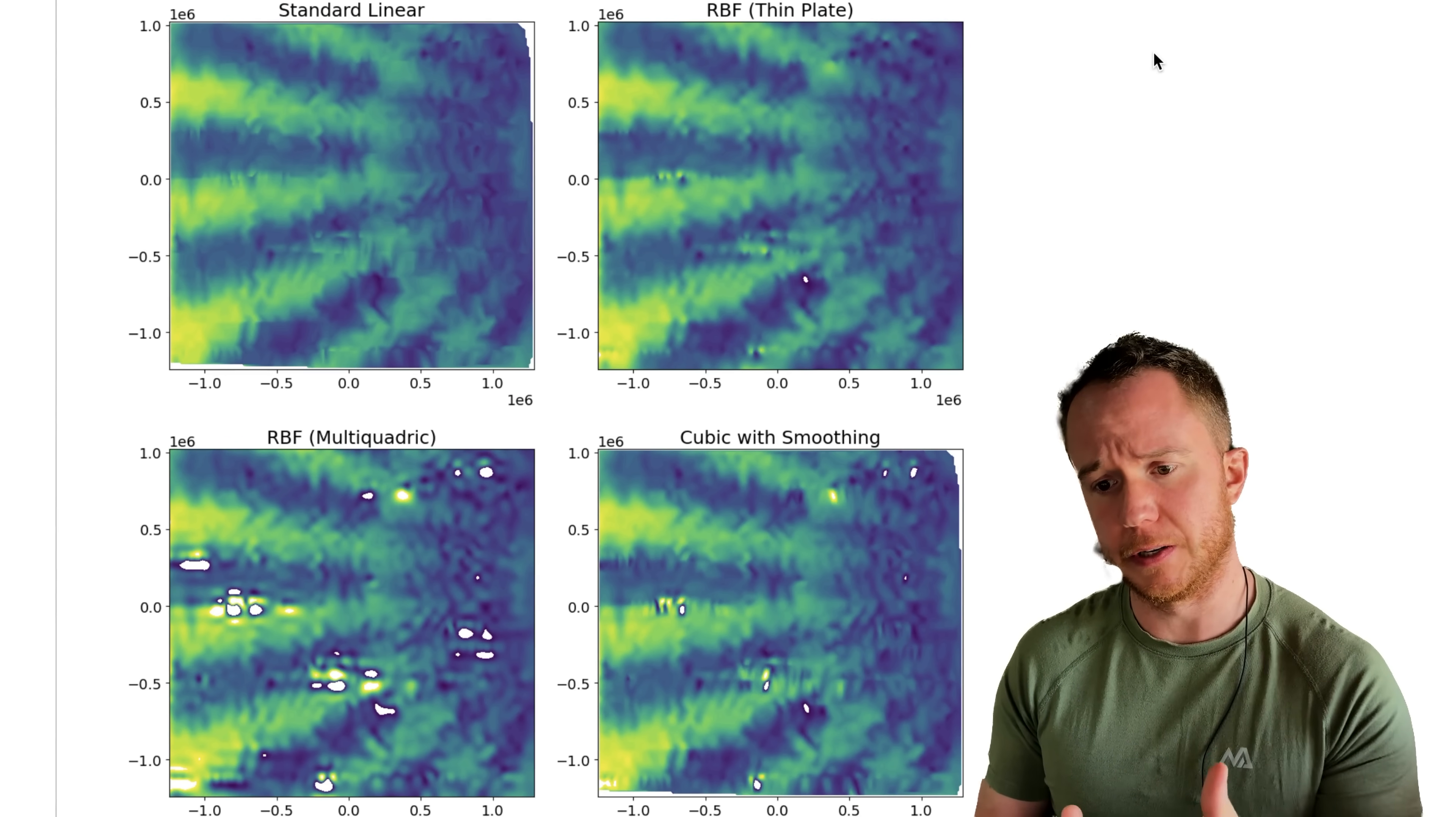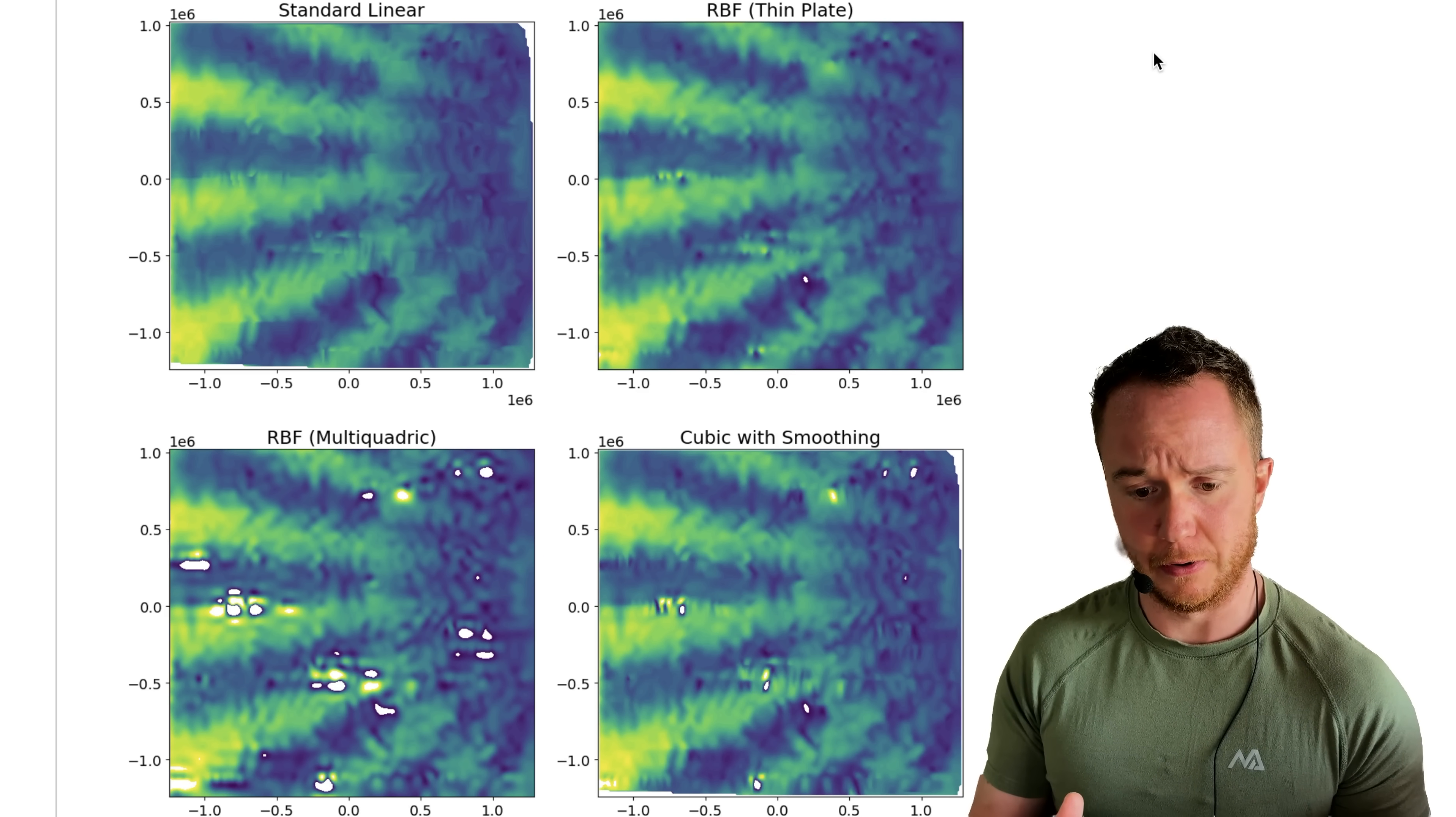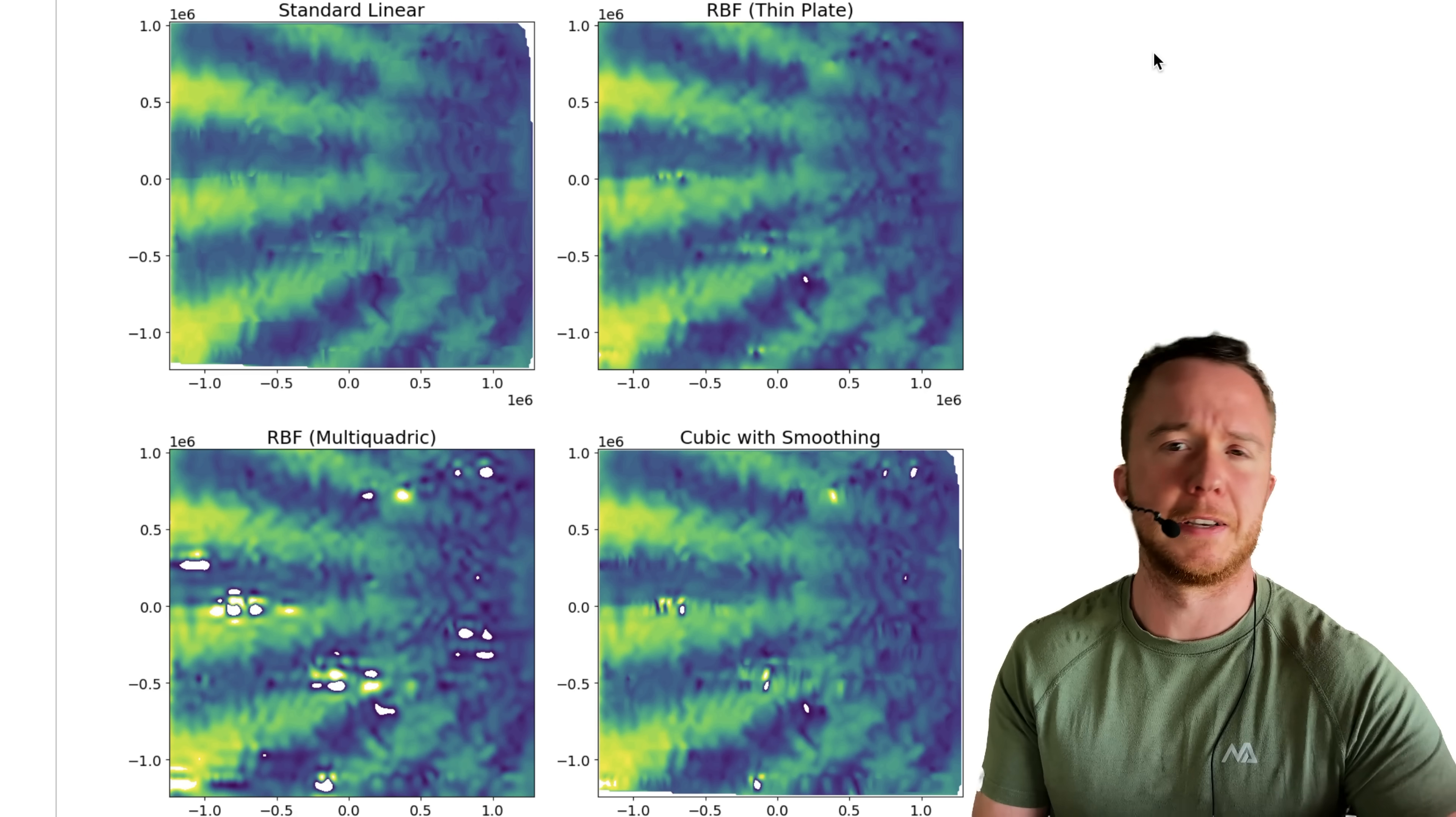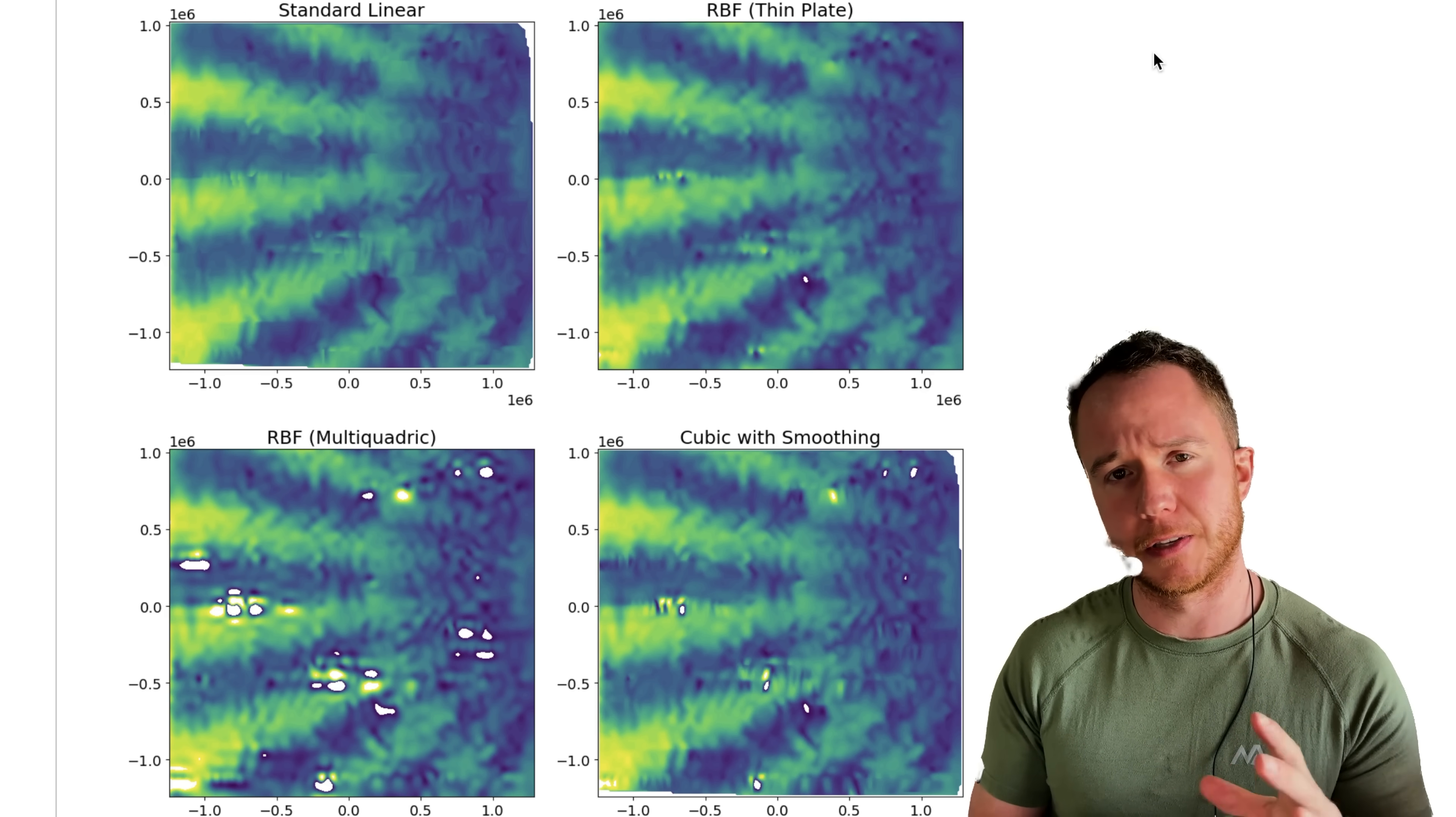The RBF multi-quadric interpolation is a lot worse than what we had before, so the holes are not only bigger, but also there are more of them, and cubic with smoothing doesn't really change anything. So at that point, I prompted Claude some more, trying to fix these things, trying other algorithms, but the only one that was consistently working was the standard linear interpolation, so let's stick to that and simplify the solution that we already had.